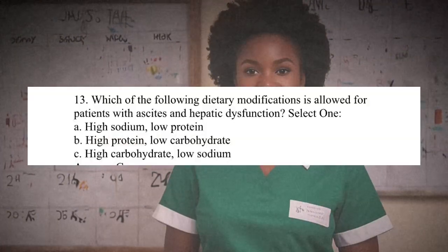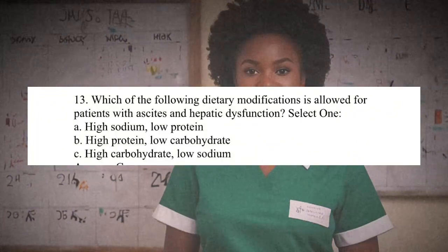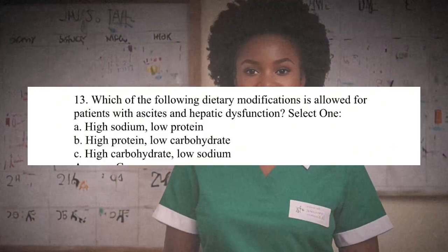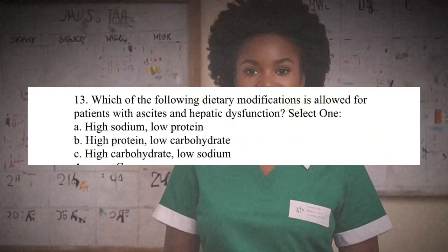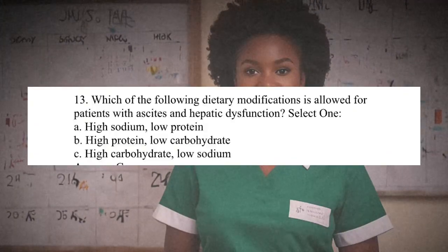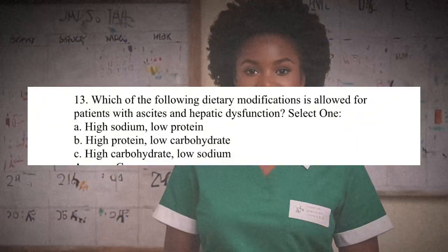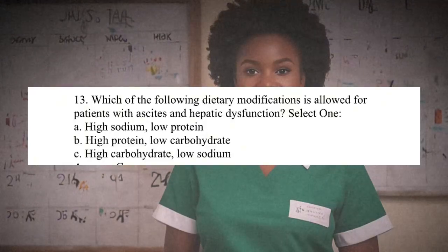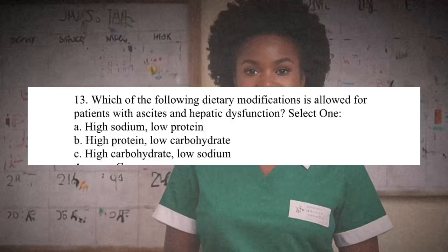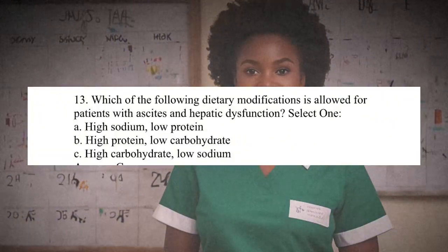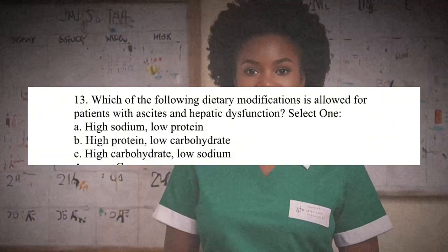Question 13: Which of the following dietary modifications is allowed for patients with ascites and hepatic dysfunction? A. High sodium, low protein. B. High protein, low carbohydrate. C. High carbohydrate, low sodium. Answer: C. For patients with ascites and hepatic dysfunction, a diet high in carbohydrates and low in sodium is recommended. This helps manage fluid retention by reducing sodium intake and provides sufficient energy through carbohydrates without exacerbating protein metabolism and potential hepatic encephalopathy risks.